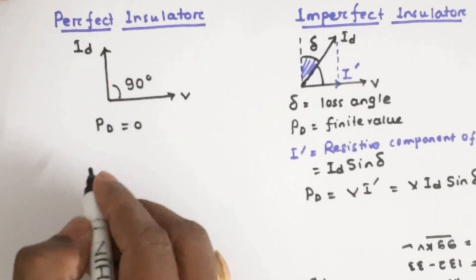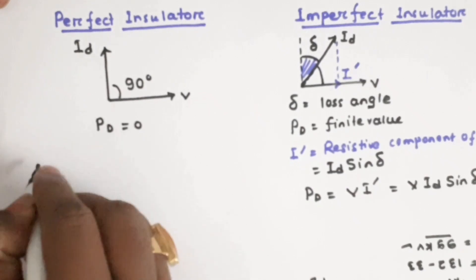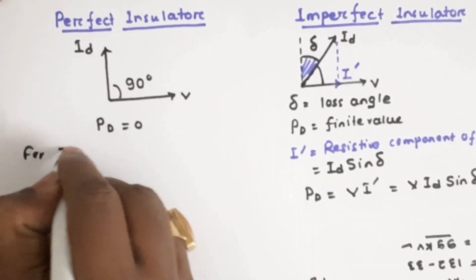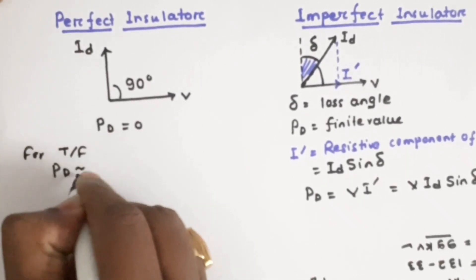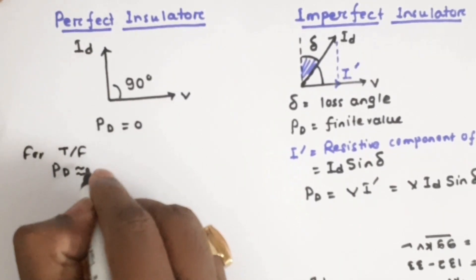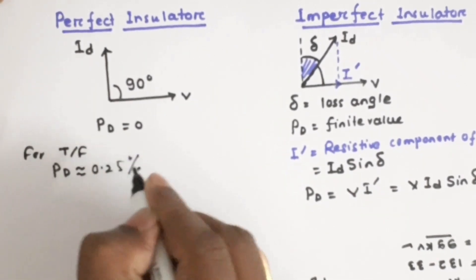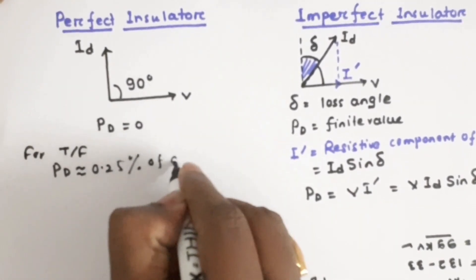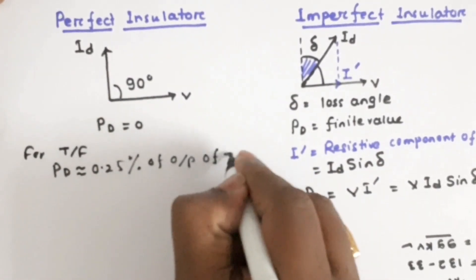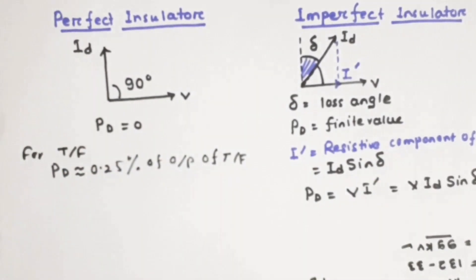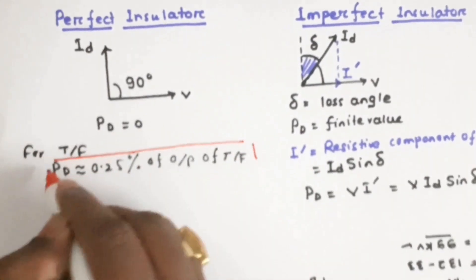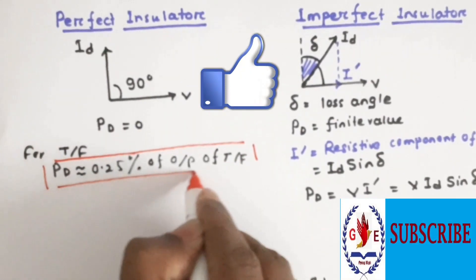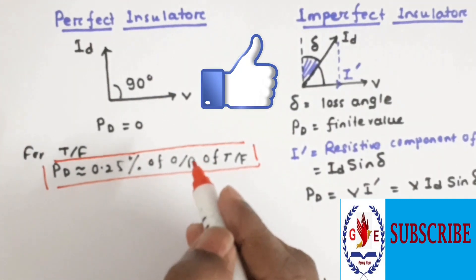For a transformer, the dielectric loss PD is approximately equal to 0.25 percent of the output of the transformer.